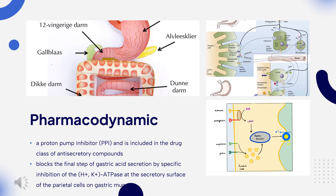Pharmacodynamics. Dexlansoprazole is a proton pump inhibitor (PPI) and is included in the drug class of antisecretory compounds. It blocks the final step of gastric acid secretion by specific inhibition of the H+/K+-ATPase at the secretory surface of the parietal cells on gastric mucosa.